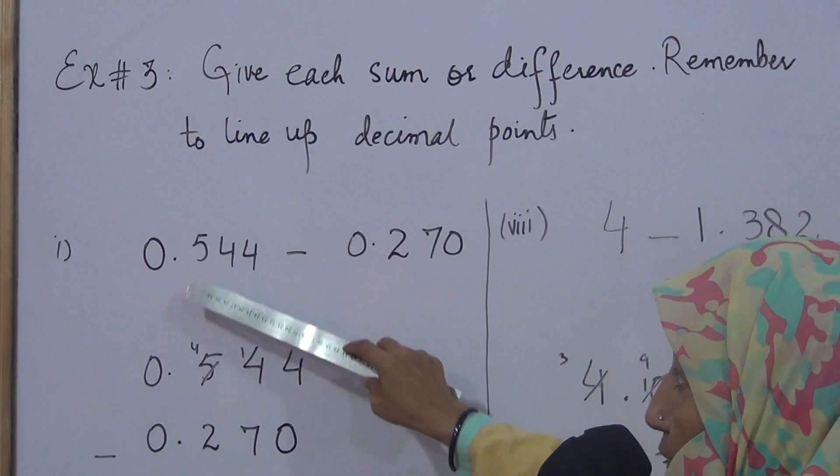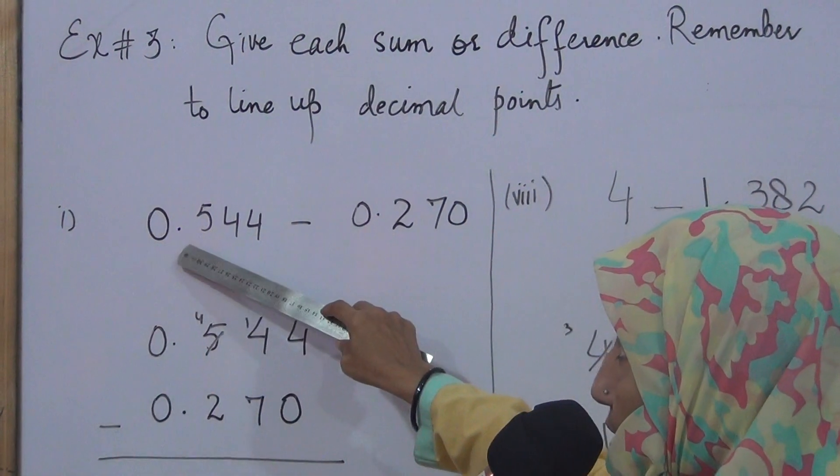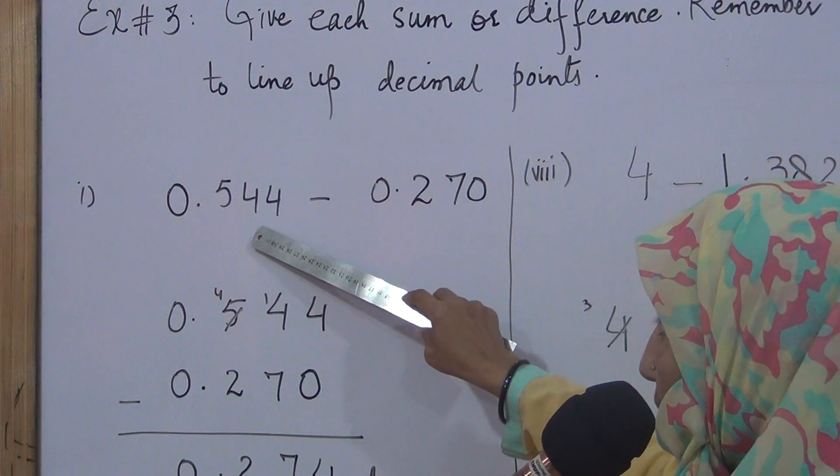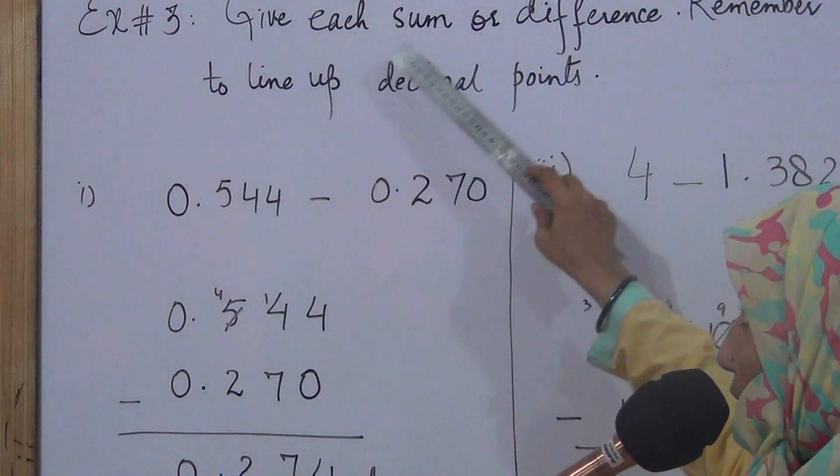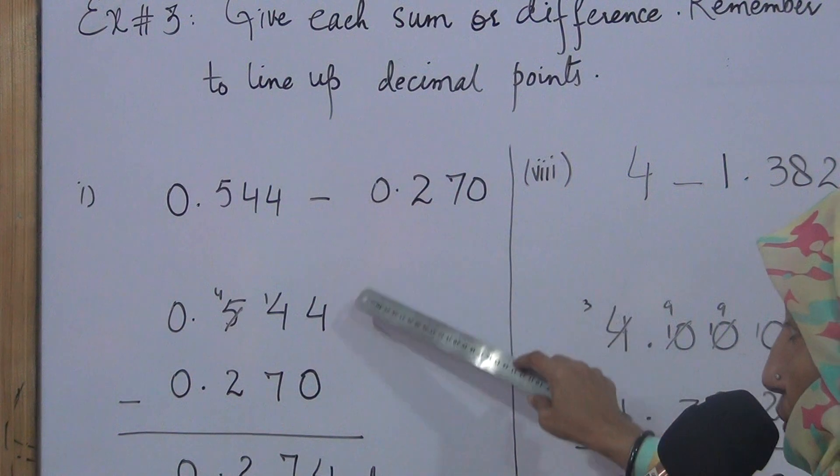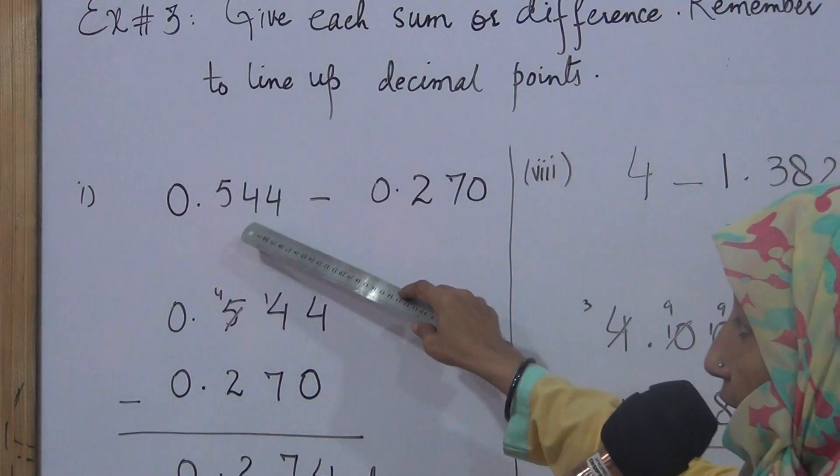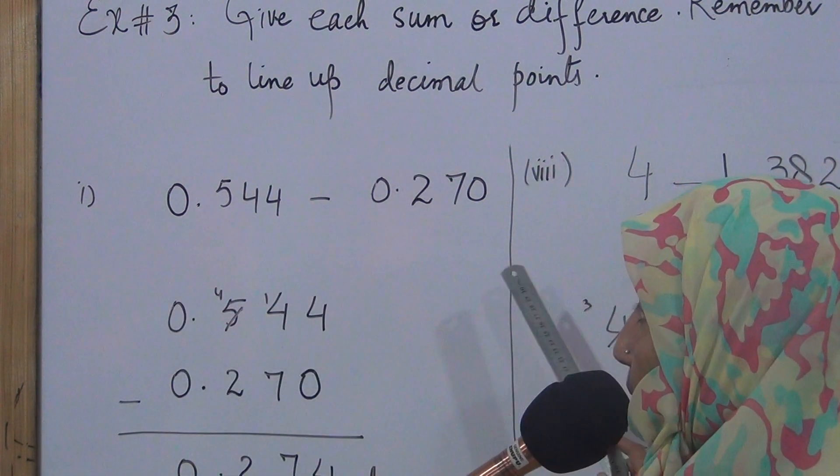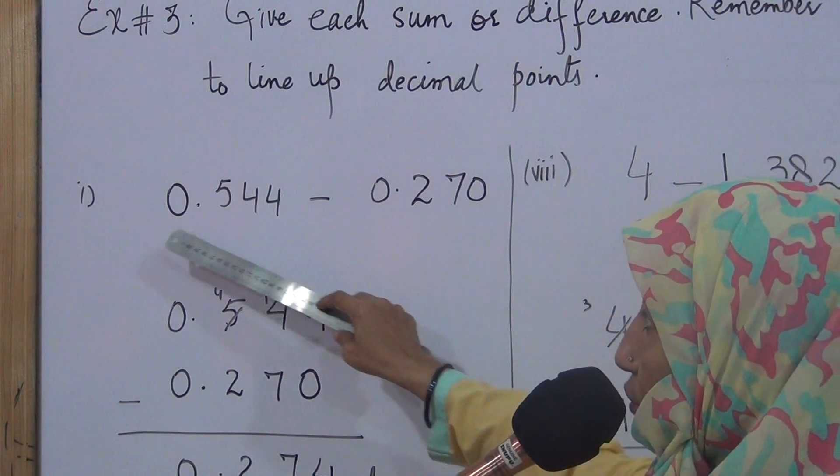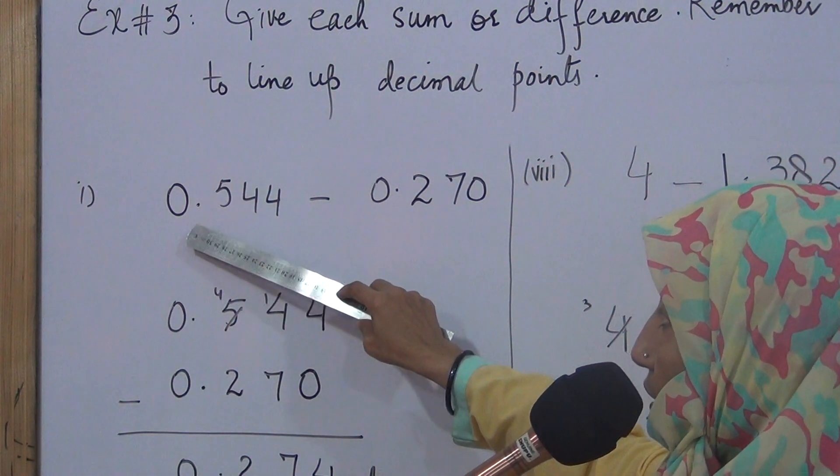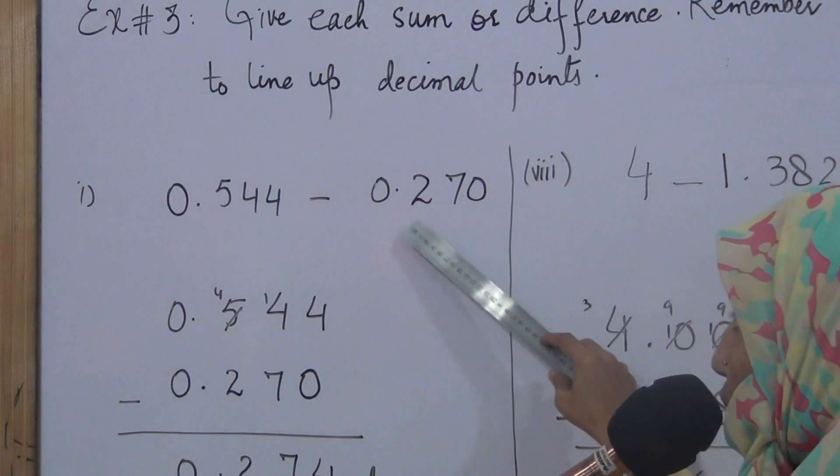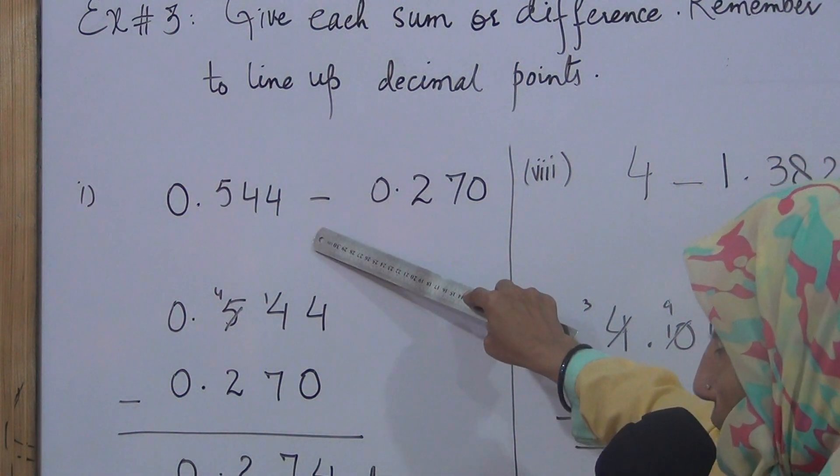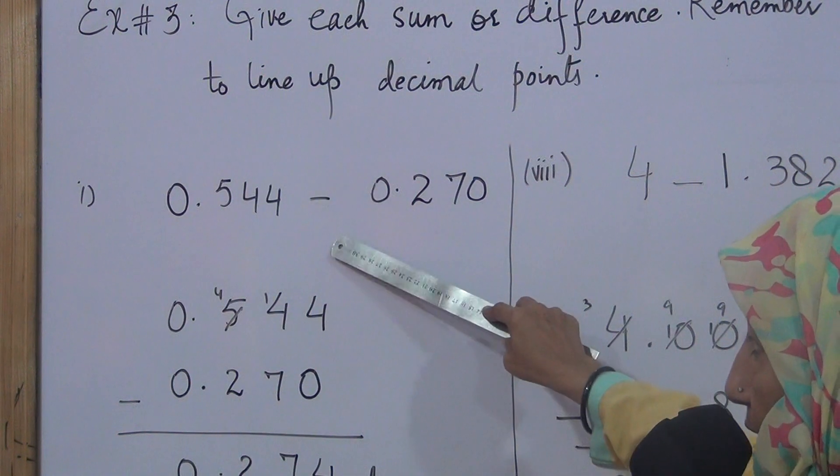Decimal number has two parts. Decimal point on left side and decimal point on right side. Left side is the whole number and right side is the fractional part. For addition or subtraction, we have to line up the numbers. Two numbers given in question number one are 0.544 minus 0.270. We have to calculate the difference of these two numbers.